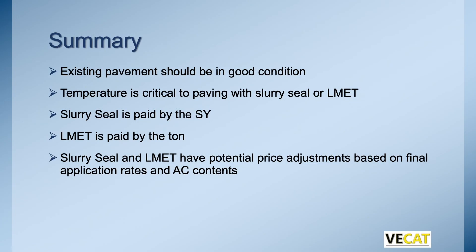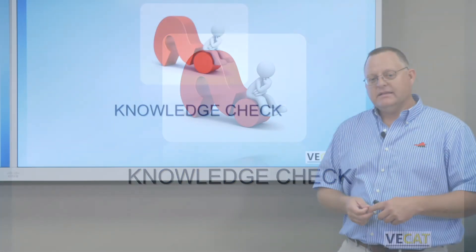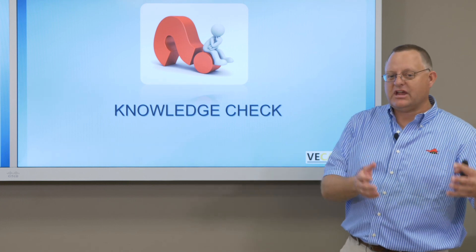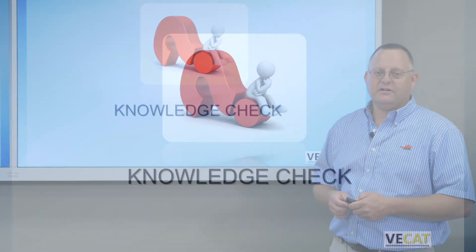In summary: existing pavement has to be in good condition for these to be effective preventive maintenance treatments. Temperature is critical — if it's too hot, cool the surface down at 90 degrees; if it's below 50, don't apply. Slurry seal is paid by the square yard, latex by the ton. Just like other materials, there are potential price adjustments if the contractor doesn't supply what was in the contract document. A knowledge check is at the end of this chapter — all the information is in your chapter and specification documents. If you have any questions, talk to your facilitator.